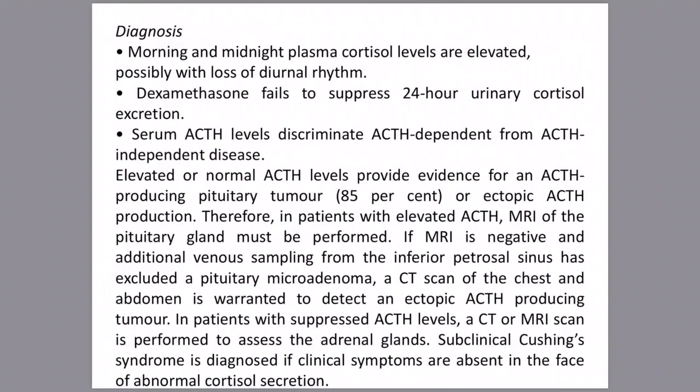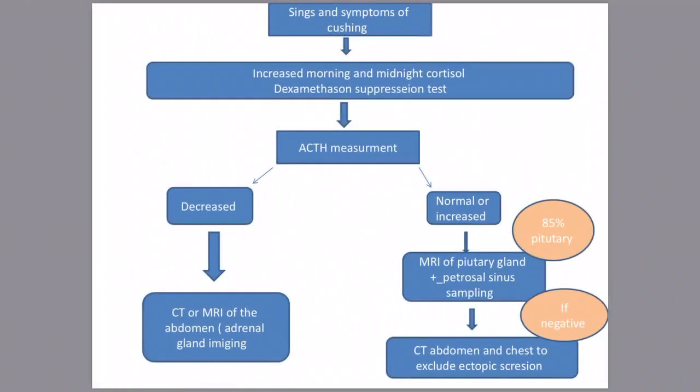Diagnosis: once Cushing's syndrome is clinically suspected, serum cortisol is measured — early morning and midnight — to assess changes in diurnal variation. The second biochemical test is the dexamethasone suppression test; if dexamethasone fails to suppress normal serum cortisol levels, the test is positive. If both tests are positive, ACTH measurement is performed to discriminate between ACTH-dependent and ACTH-independent Cushing's syndrome.